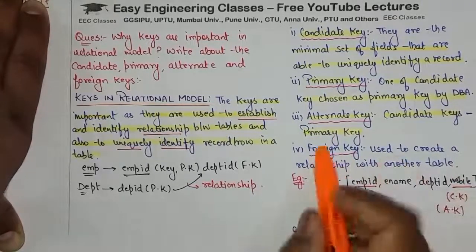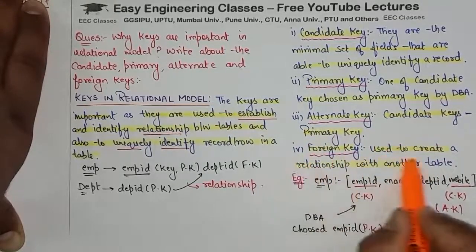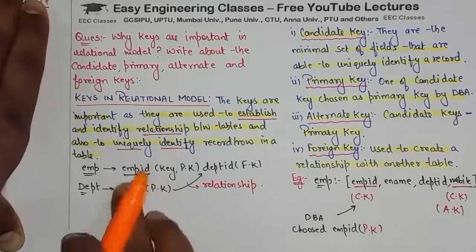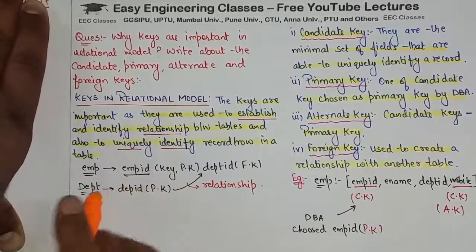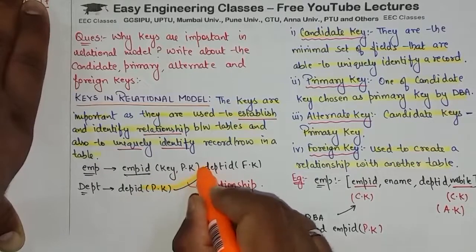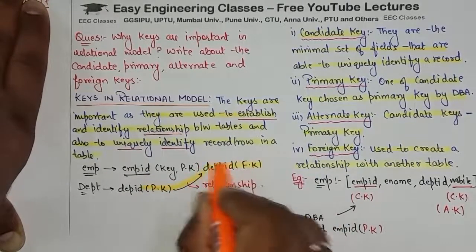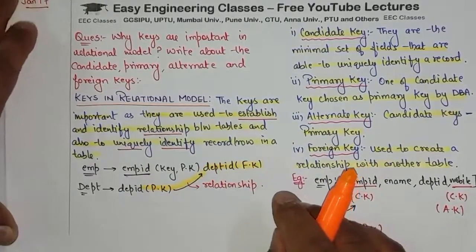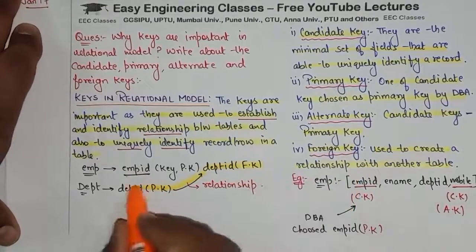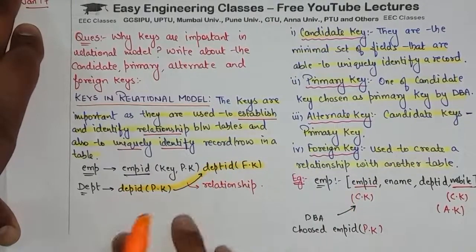Then foreign key — foreign key kya hoti hai? It is used to create a relationship with another table. Jaise mein aapko bataya ki ek table ki primary key hoti hai jo act karti hai as foreign key in another table. So that is the relationship between two tables — foreign key.